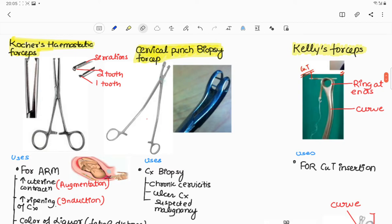Ninth forceps is Kocher's hemostatic forceps. It contains two teeth at one end and one tooth at another end, so that on closing the forceps, one tooth will fit into another between the two teeth.